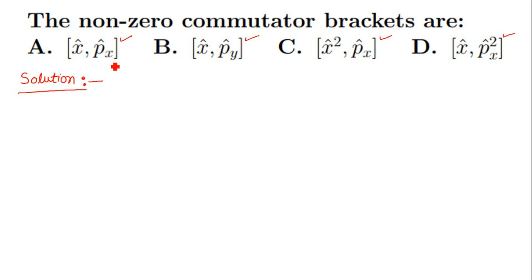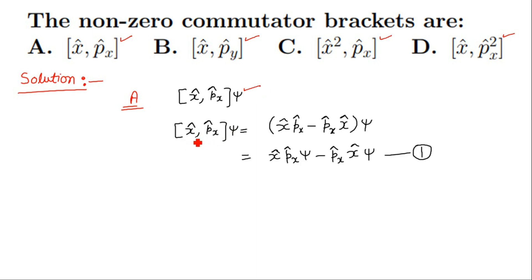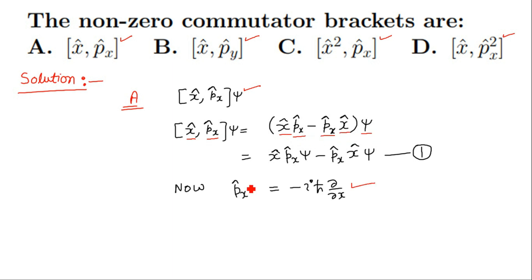Let us solve part a first. Suppose this commutator bracket is applied on some wave function psi. When we open this commutator [x, px], it becomes x-cap p-x-cap minus p-x-cap x-cap acting on psi. We know that operator p-x-cap is given by minus iota h-cross del by del x.